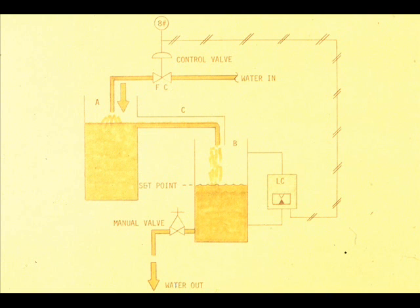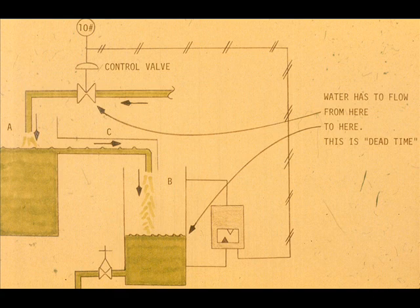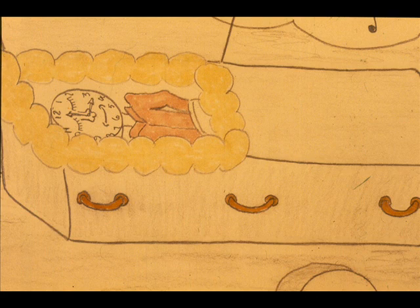Let's rearrange our level control schematic so our level control is admitting water to tank A. It gravitates to tank B, and we manually set the rate of withdrawal from tank B. Now we will slightly open the manual valve. The level slowly falls in B. The controller opens the control valve and admits more water to A. Does this immediately affect the level in B? No, because the water has to flow from the control valve to tank A, raise the level in tank A, and then flow through flume C to tank B before it has any effect on the level in tank B. This is known as dead time.